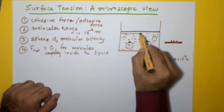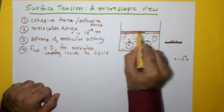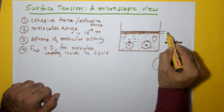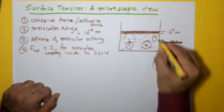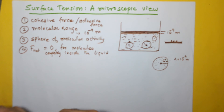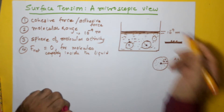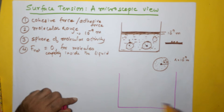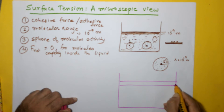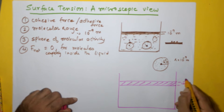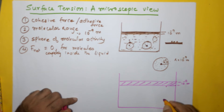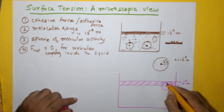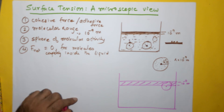Let's consider a thin film at the surface of the liquid, with a thickness of 10⁻⁹ meter — equal to the molecular range. If I take a molecule just below the surface film, the distance to the surface is 10⁻⁹ meter. The sphere of molecular activity will still be fully within the liquid, and for every molecule on one side there is a molecule on the other. Therefore, the net force on this molecule is still zero.